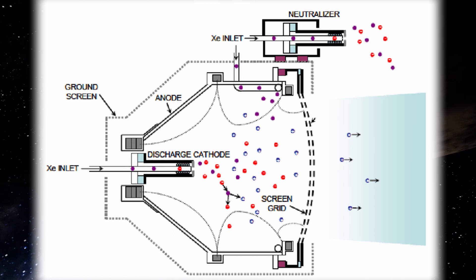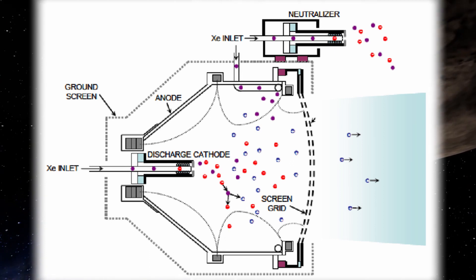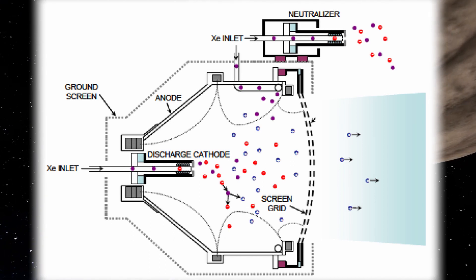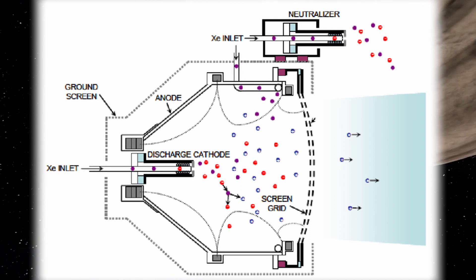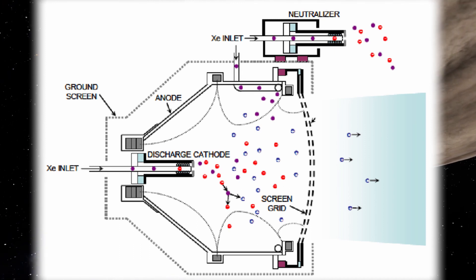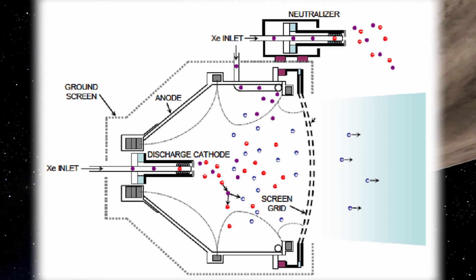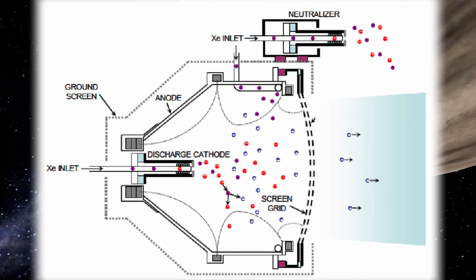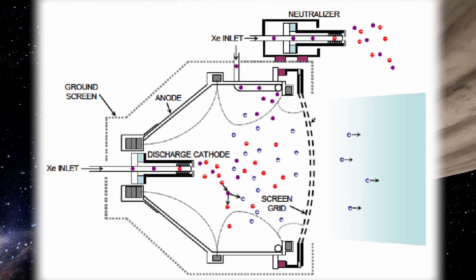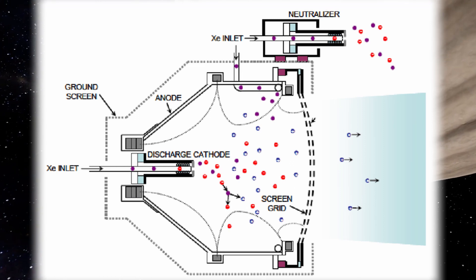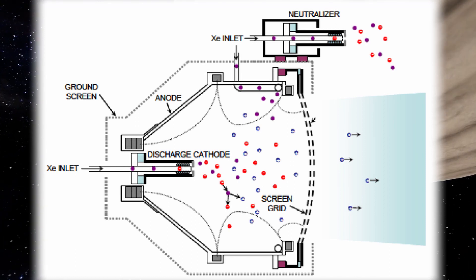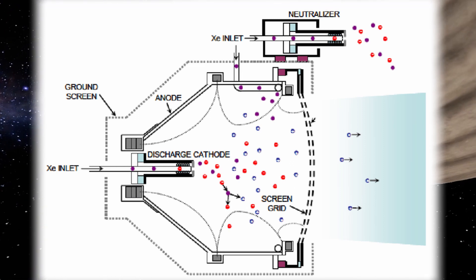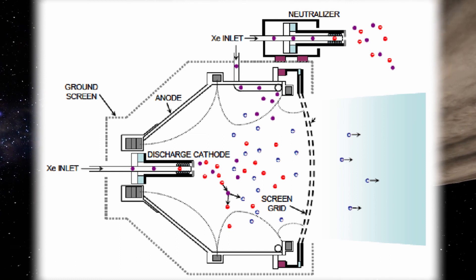The kinetic energy of the electrons bouncing into them pushes them towards the back of the ionization chamber. At the back of the ionization chamber, there are two grids with a very high voltage across them. The positive grid pushes the positive xenon ions towards the back of the engine, while the negative grid pulls them towards the back of the engine and out to the exhaust — the same way that magnets push and pull each other based on their polarity.